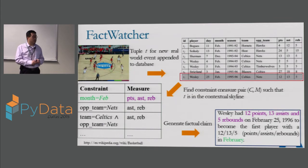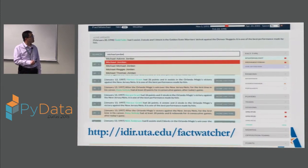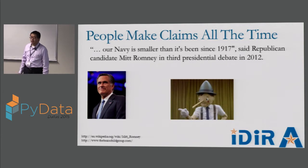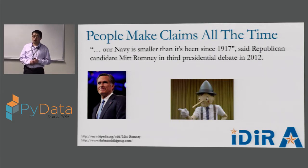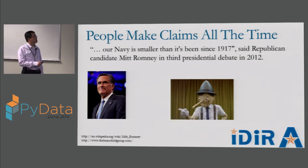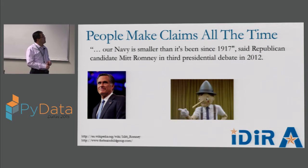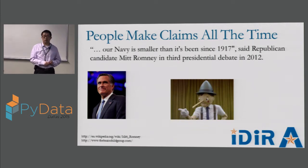I'll focus on fact-checking today. People make claims — number-based claims, factual claims — all the time, especially politicians. Here's a statement made by Mitt Romney in one of the presidential debates in 2012. He said the US Navy is smaller than it has been since 1917. The general public and reporters are interested in knowing whether this is true or false. It turns out this is not a simple or easy question — it's quite tricky.